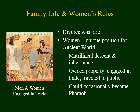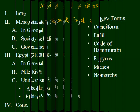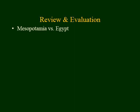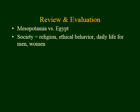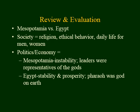Before we stop, I'd like to review some important concepts and ideas addressed in this lecture. The focus dealt with key traits of Mesopotamia and Egypt. When exploring society, we looked at religion, ethical behavior, daily life for men and women, and even slavery in some cases. We also explored politics and society. The Mesopotamian political system was characterized by instability and their leaders were representatives of the gods. In Egypt, their lives were characterized by stability and prosperity, and Pharaoh was a god on earth. A potential essay question might ask you to compare and contrast different characteristics of these two ancient civilizations.